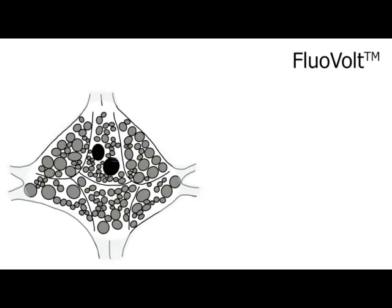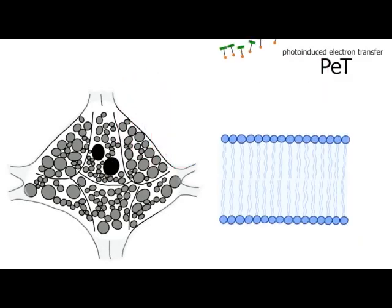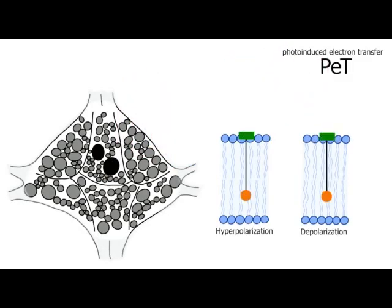Fluorwold works by photoinduced electron transfer or short PET. Here you can see a cell membrane with its lipid bilayer. And now the dye comes. It consists of a molecule membrane spanning wire, which you can see in black, an electron rich donor in brown, and a fluorescent receptor in green, which is anchored in the cell membrane.